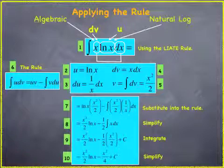Then in item five, in order to get v, we have to integrate dv. And we get, in this case, x squared over two.